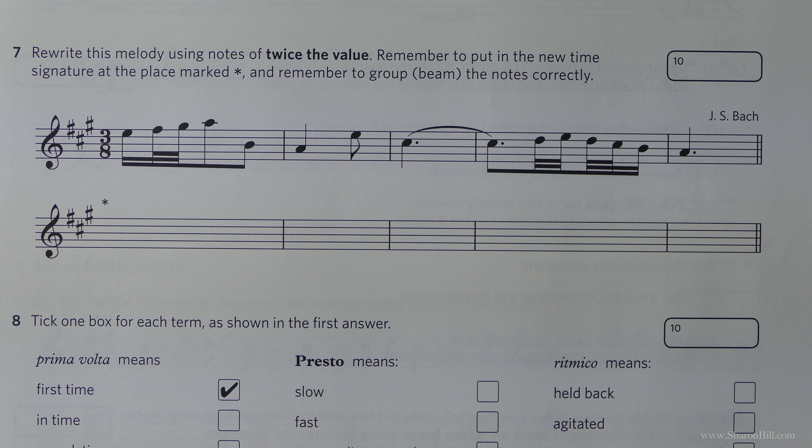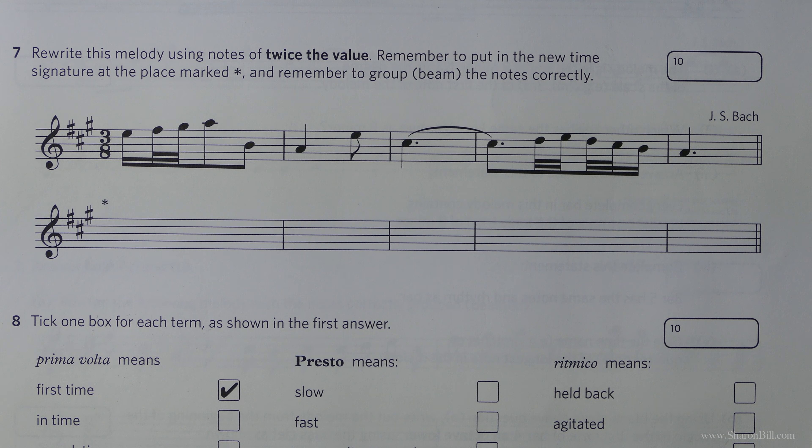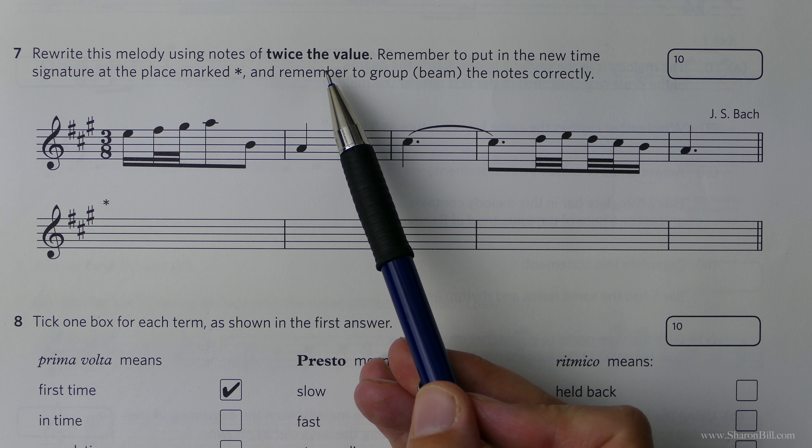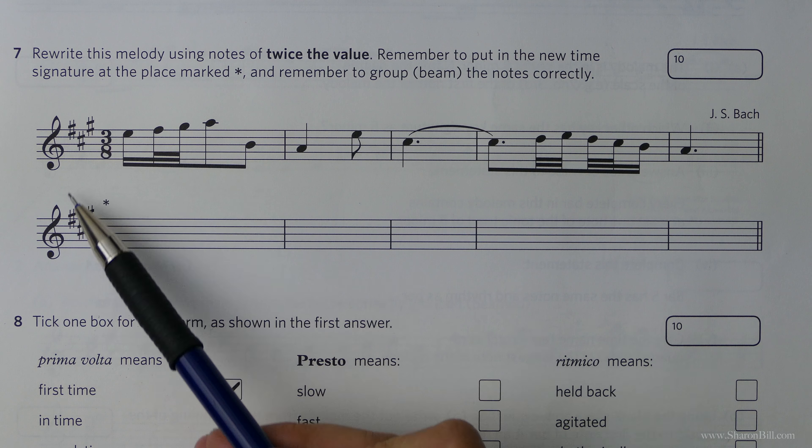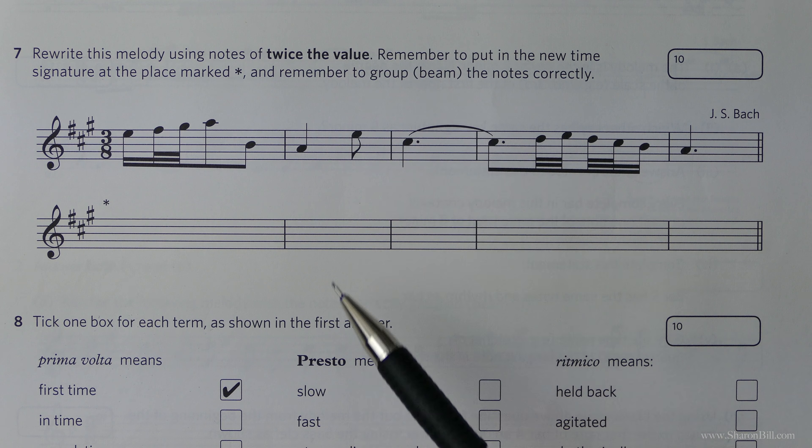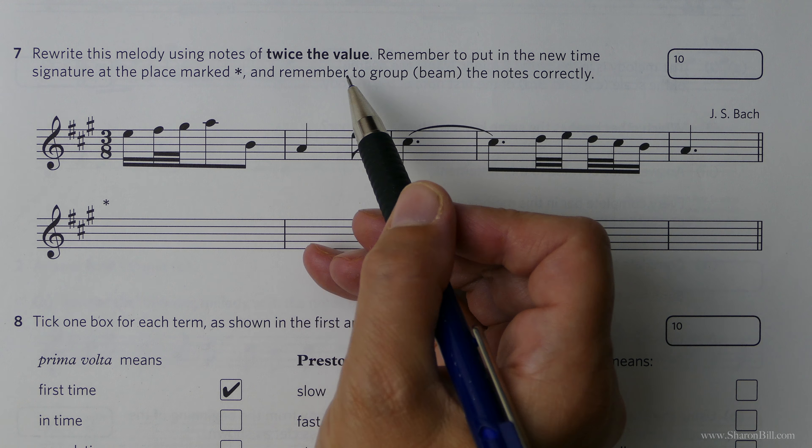Question 7 asks us to rewrite this melody using notes of twice the value. And we need to put in a new time signature at the place, well obviously at the beginning. And then we need to regroup the notes, rebeam them as necessary.